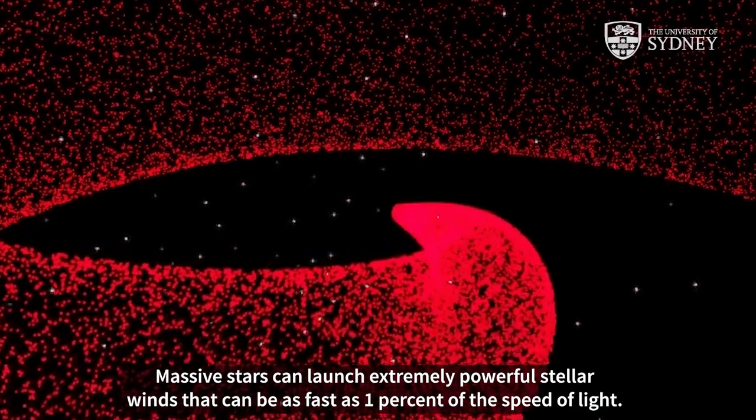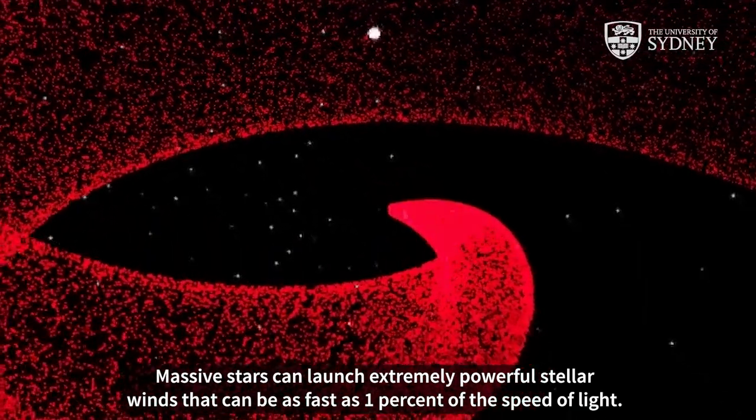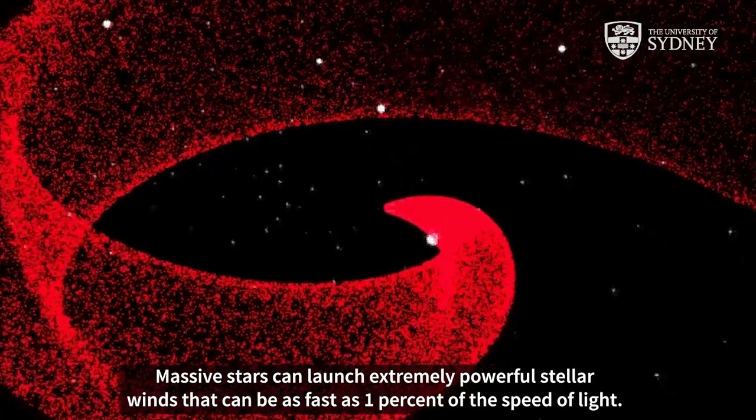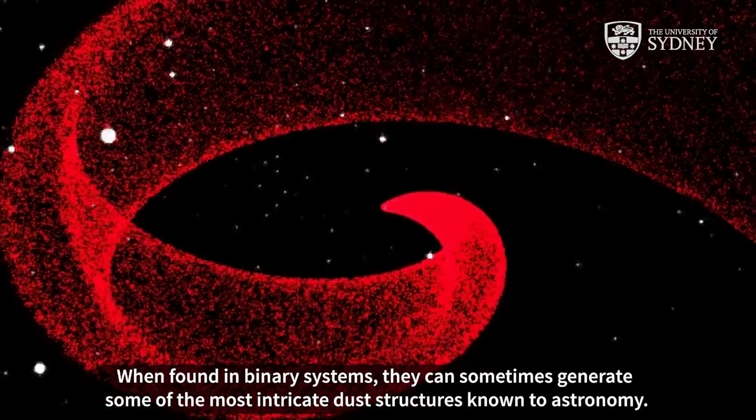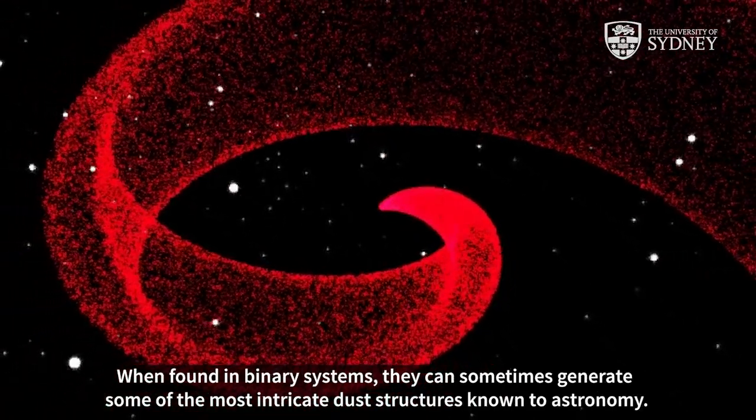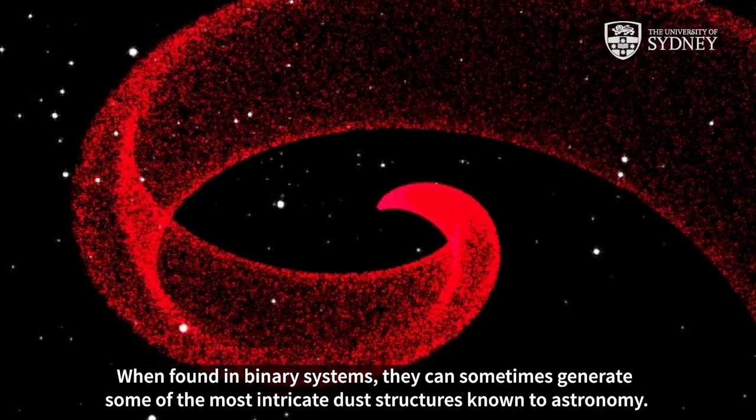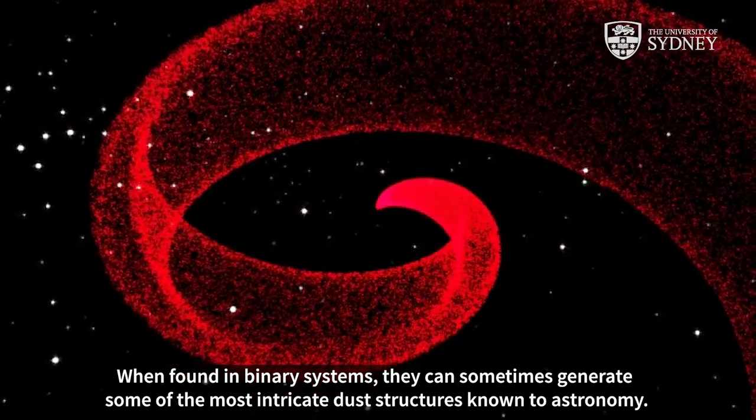Massive stars can launch extremely powerful stellar winds that can be as fast as 1% of the speed of light. When found in binary systems, they can sometimes generate some of the most intricate dust structures known to astronomy.